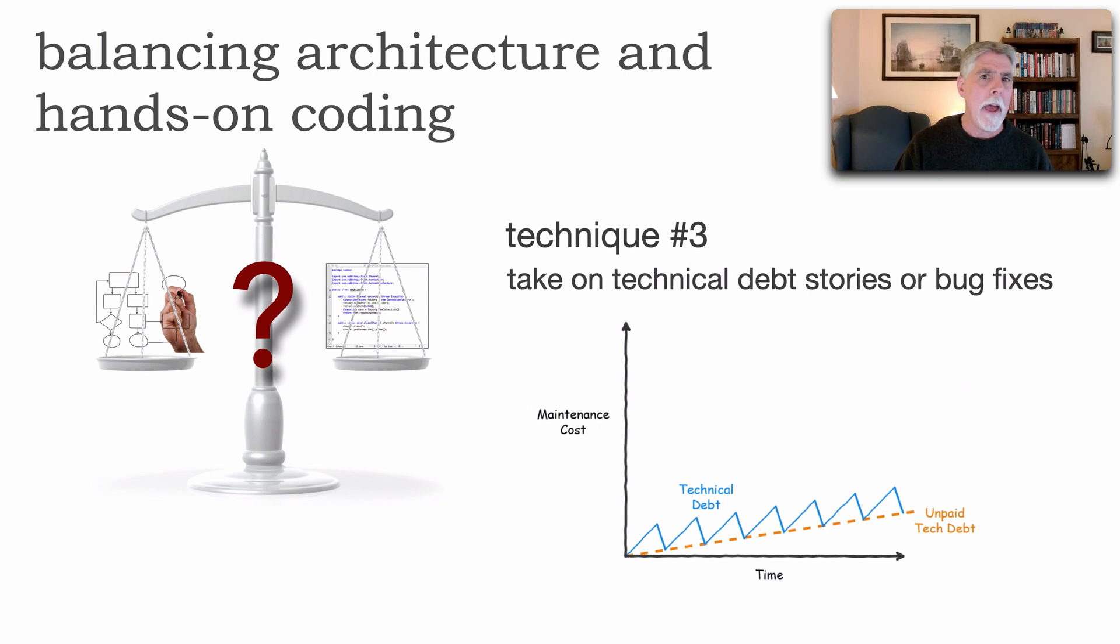A third technique is, as the architect, just volunteer to take on some bug fixes or maybe address some of the technical debt. Your team will love you for this. This is not critical, so not things that may not have to get done in that particular iteration. But by taking on that technical debt, you start paying that down. It frees up the team to be able to work on the core functionality. The same thing with bug fixes. What a great way as the architect of having that practice of root cause analysis and debugging.